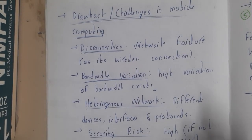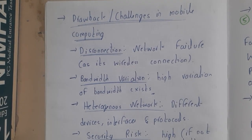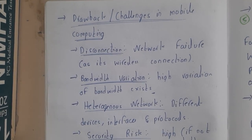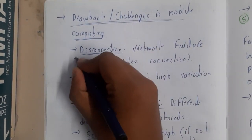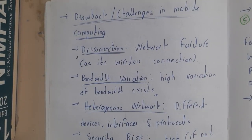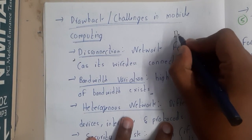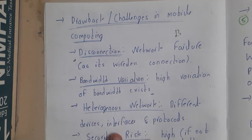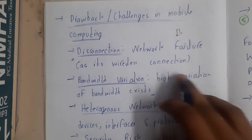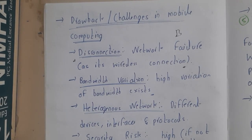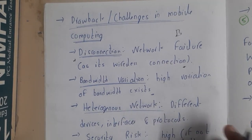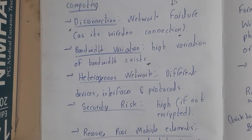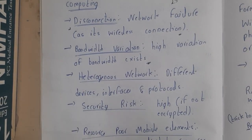Now let us go through some drawbacks or challenges in mobile computing. Not everything is perfect. The first drawback is disconnection — for example, during an important meeting or viva, your Wi-Fi connection could suddenly be lost on your laptop and you have to reconnect. There can be sudden fluctuations and network failures because there is no fixed wire, so disconnections can happen at any time. Bandwidth variation is also higher compared to wired connections.